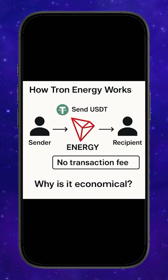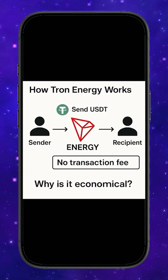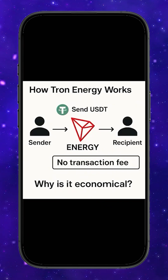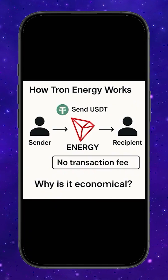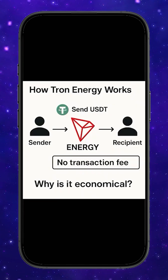Now let's quickly break down how this actually works and why it saves you money. On the Tron network, every time you send USDT, the network requires resources — mainly energy and bandwidth. If your wallet doesn't have enough energy, Tron burns your TRX to pay for the transaction. Most users don't even notice this — they just lose TRX on every transfer. But there's a smarter way: instead of burning TRX over and over again, you can rent energy once and use it for multiple transactions.